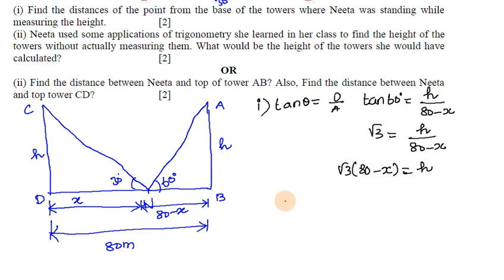If we cross multiply, x divided by √3 equals h.